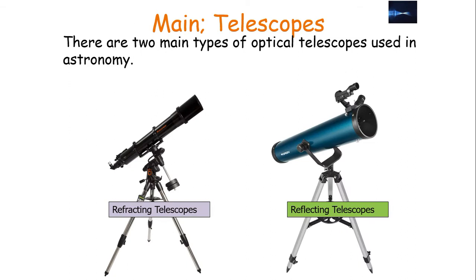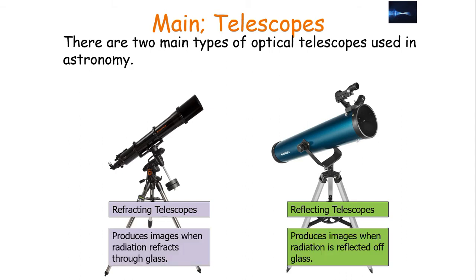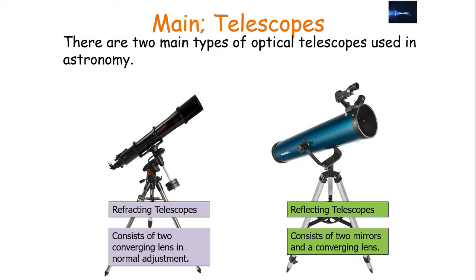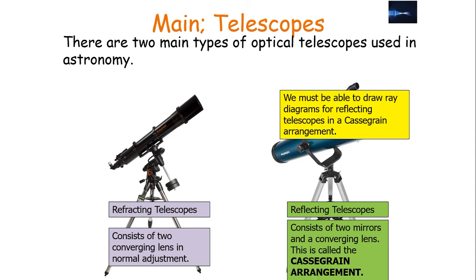There are two main types of optical telescopes used in astronomy: refracting telescopes and reflecting telescopes. Refracting telescopes produce images when radiation refracts through glass, whilst reflecting telescopes produce images when radiation is reflected off mirrors. Refracting telescopes tend to be expensive, easily distorted and difficult to manufacture, whilst reflecting telescopes are cheaper and can be supported and manufactured more easily. Refracting telescopes produce images with chromatic aberration, whilst reflecting telescopes produce images with spherical aberration. Refracting telescopes consist of two converging lenses in normal adjustment, whilst most reflecting telescopes consist of two mirrors and a converging lens — a Cassegrain arrangement.